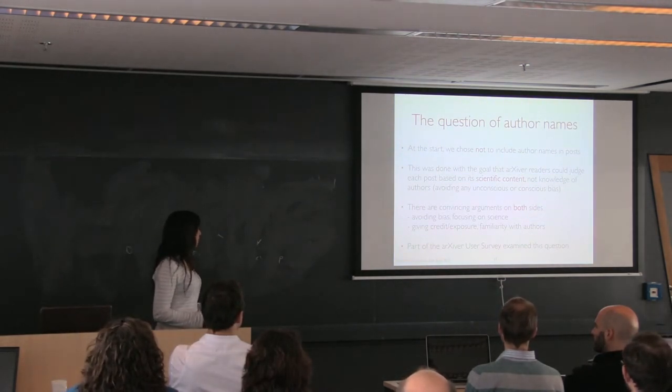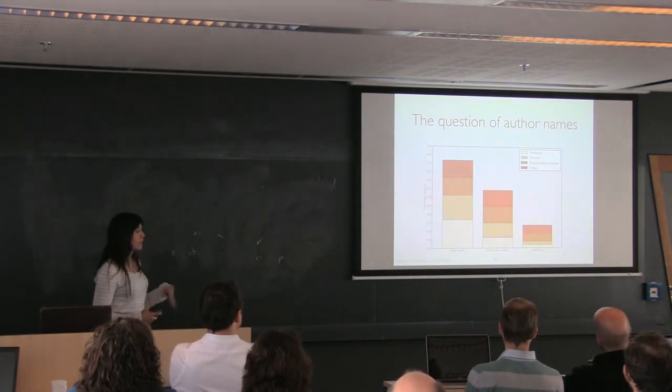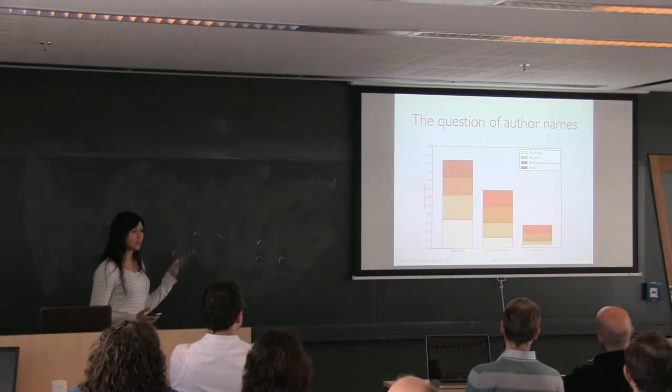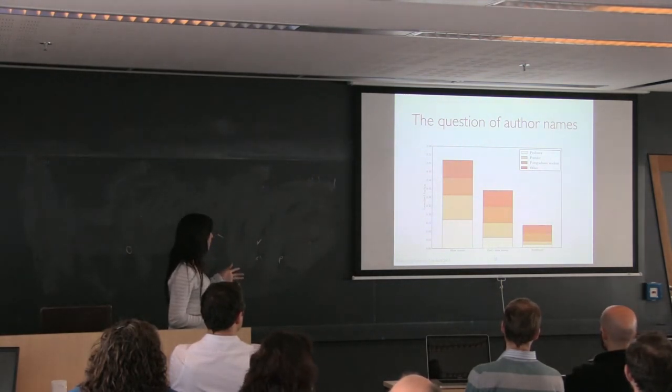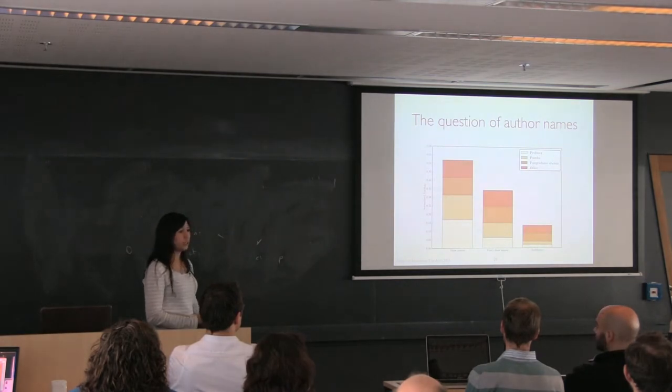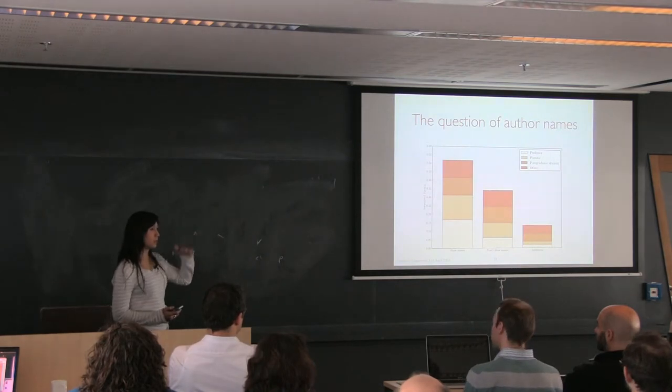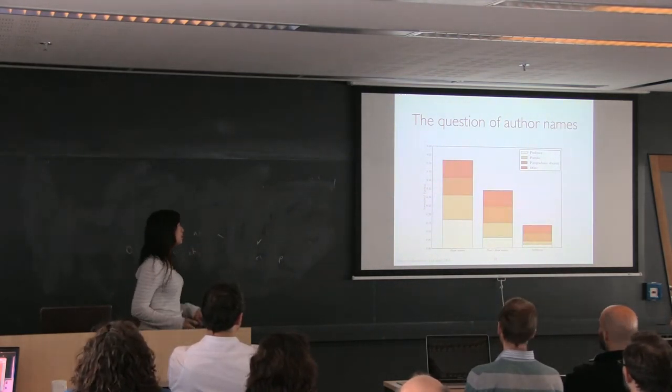We used the survey to answer that question and figure out how we would move forward. This was the response. This plot was from an astroinformatics conference, so we were interested in the response based on level. You could see that students were divided, but postdocs and professors were much weighted towards the show names. We decided that we didn't want to have a question of not having credit for the papers, so we added the names, but what we did was we put them under the figures. So you see the figures first and then you see the names, so you can still make the judgment of content first.